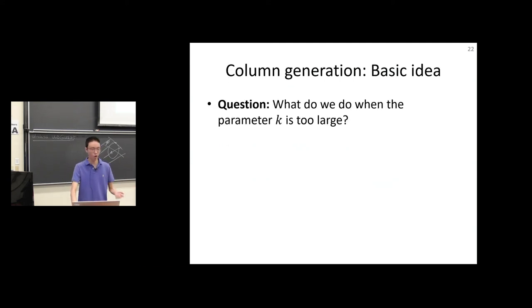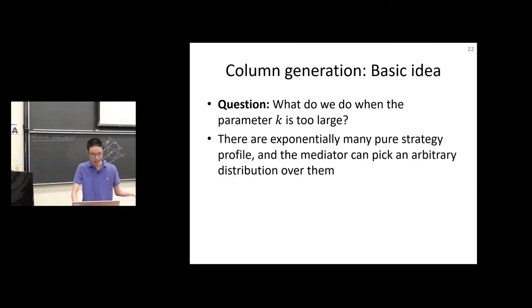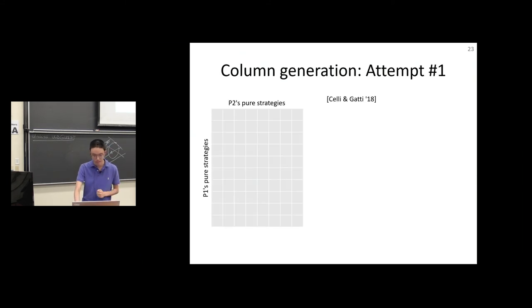Now I'll briefly go over what to do when this parameter is large. When this parameter is too large, the previous algorithm won't work. It will simply run out of memory because trying to build that bag is too cumbersome. There are exponentially many pure strategy profiles, and the mediator can pick an arbitrary distribution over them. So one thing you might think about is column generation. I'm going to incrementally generate pure strategy profiles, and I'm going to only consider distributions over those. I'm going to add strategy profiles until I can prove that what I've been doing is optimal.